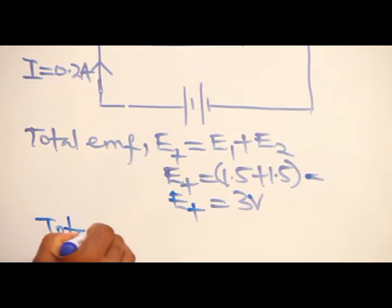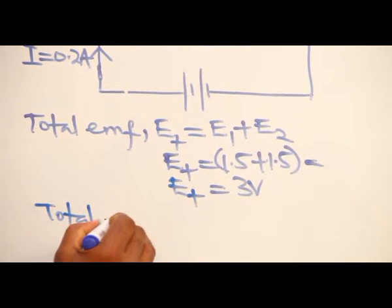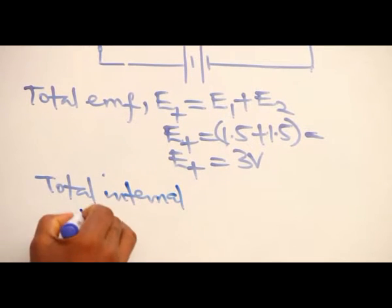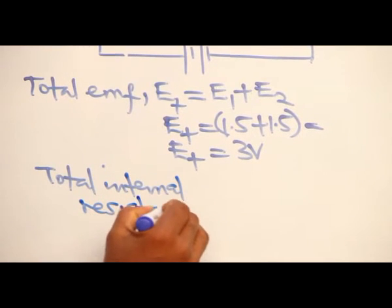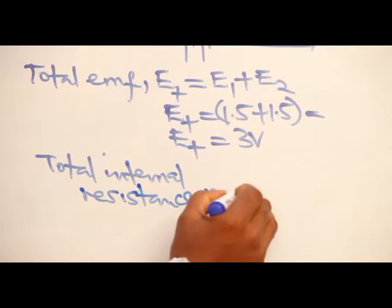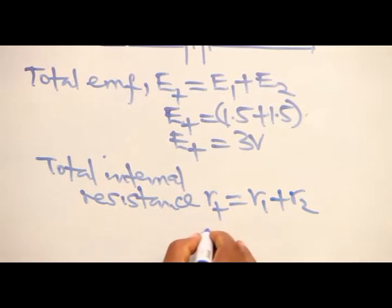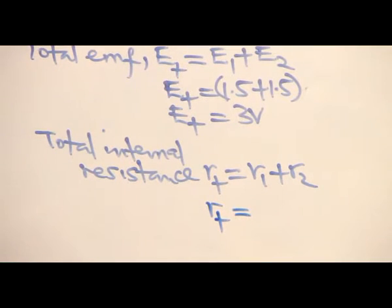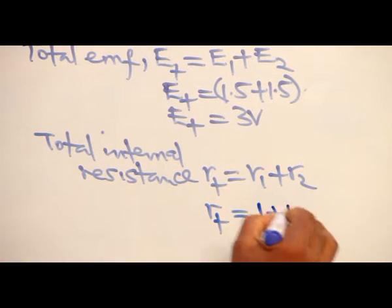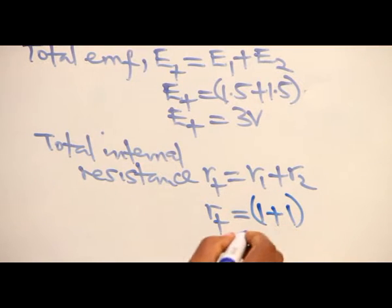Total internal resistance. R total will give me R1 plus R2. So the total internal resistance will give 1 plus 1. That gives us 2 ohms.